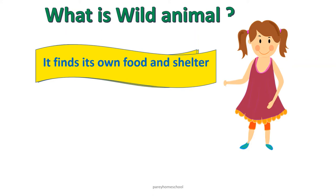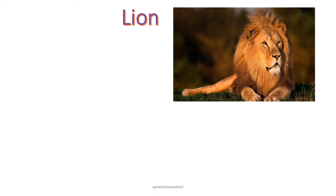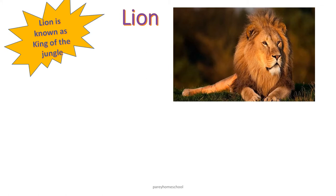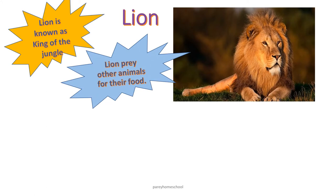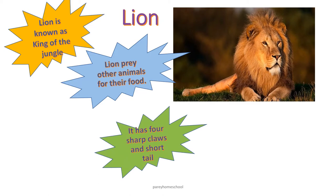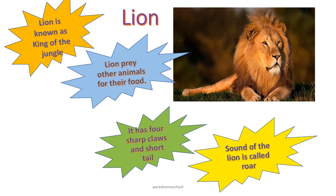Now let's see a few of the wild animals. Can you guess which animal is this? This is lion. Lion is known as king of the jungle. Lion preys on other animals for their food. Lion has four sharp claws and a short tail. The sound of the lion is called roar.